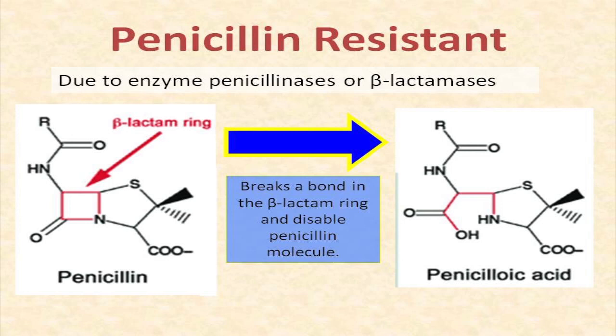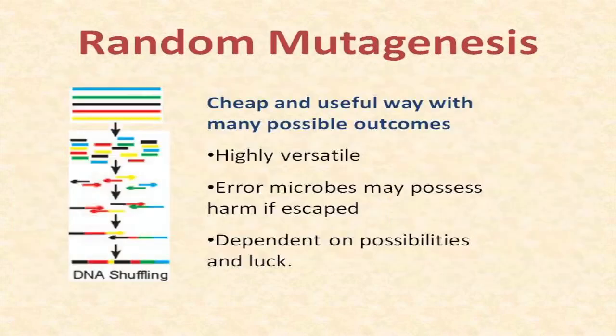Penicillin-resistant strain structures are as follows. Due to enzymatic action of penicillinase or beta-lactamase, it breaks down bonds in the beta-lactam ring, disabling the penicillin molecule. As for random mutagenesis, it is a cheap and useful way for many possible outcomes and is highly versatile, but error microbes may pose harm if they escape from the laboratory.